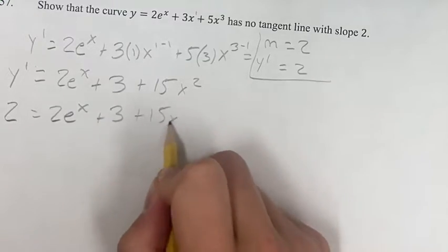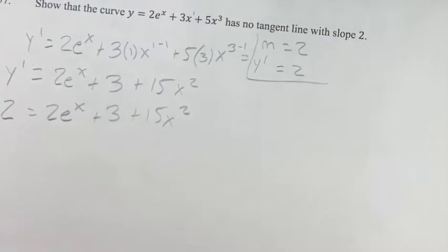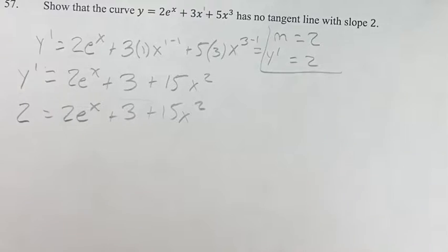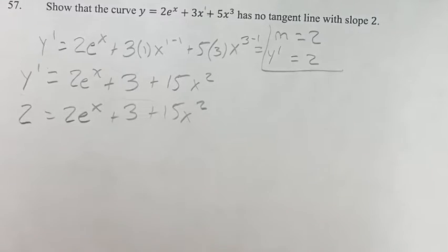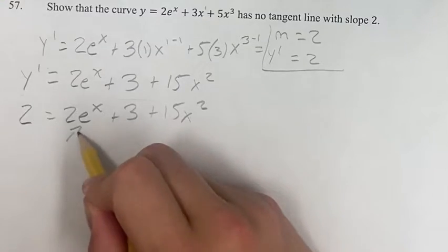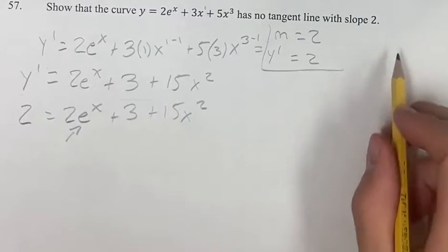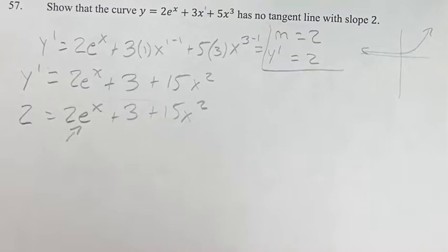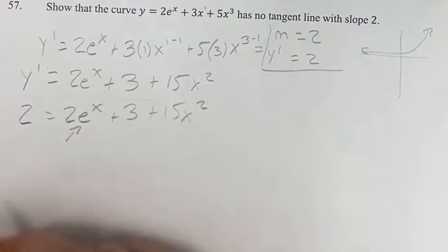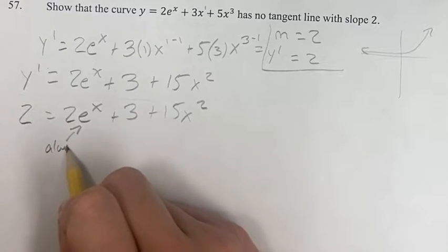If you're thinking about why this is never the case, you could graph this function and see that there's never a value of x where this equals 2. But if you actually just look at this function, we have three parts here. We have 2e to the x - and e to the x is always positive. If you think about the graph of e to the x, the value is always positive, and 2 times a positive value is always positive.